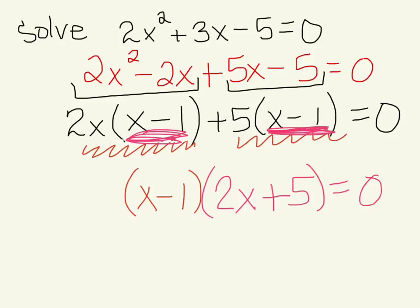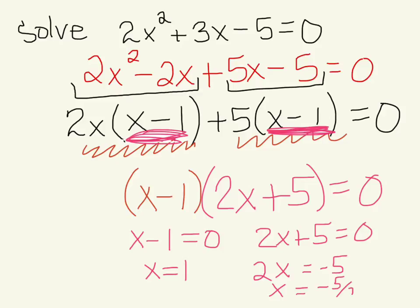So there's our factored form. In order to get our final answer for the solutions, we have to take each of these factors, set them equal to 0 and solve. We have x is equal to 1, 2x is equal to negative 5, x is equal to negative 5 halves.